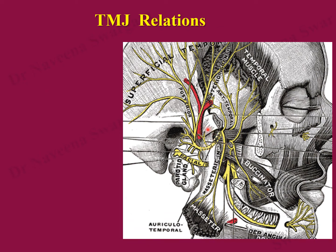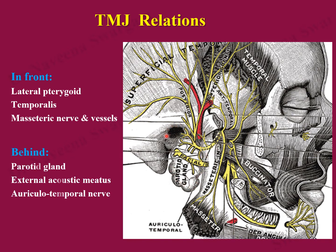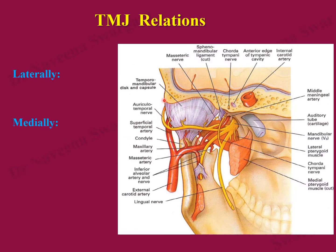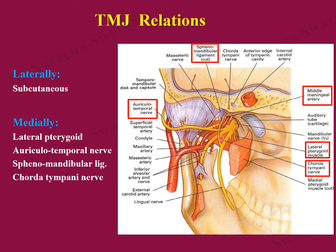Relations of the joint: in front, it is related to the lateral pterygoid muscle, temporalis muscle, and masseteric nerve and vessels. Behind, it is related to the parotid gland, external acoustic meatus, and auriculotemporal nerve before it ascends to the scalp. Laterally the joint is subcutaneous. Medially it is related to the lateral pterygoid muscle, auriculotemporal nerve looping around the middle meningeal artery, sphenomandibular ligament, and chorda tympani nerve before it joins the lingual nerve.